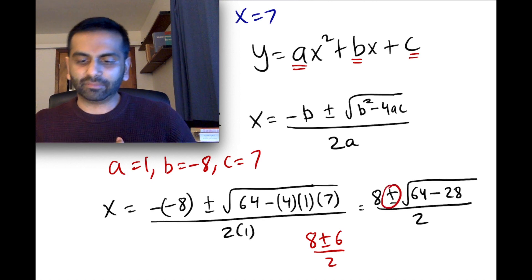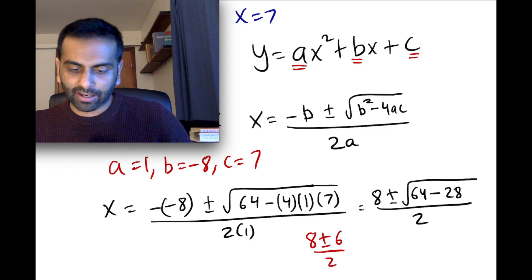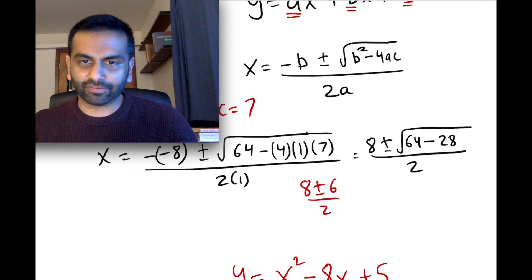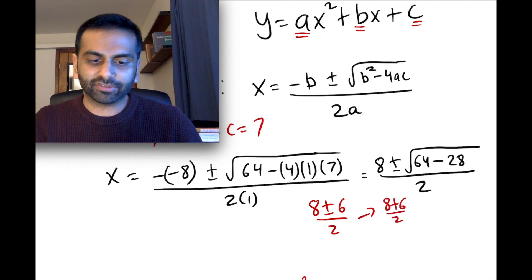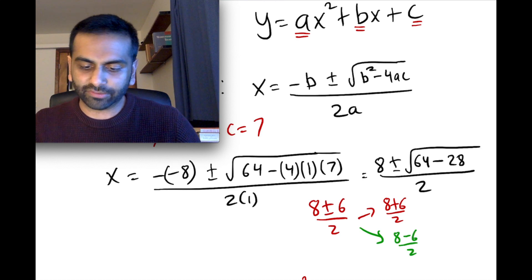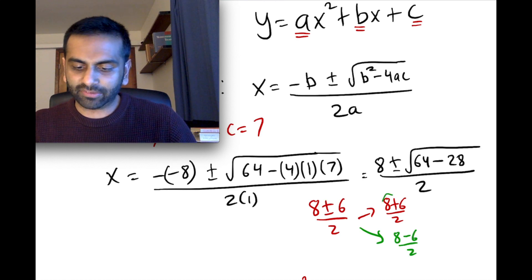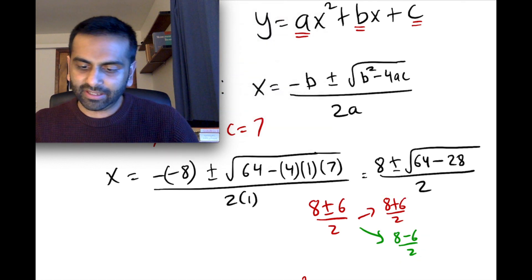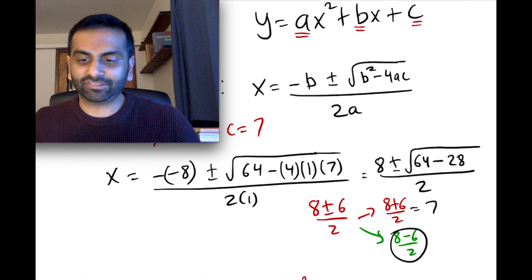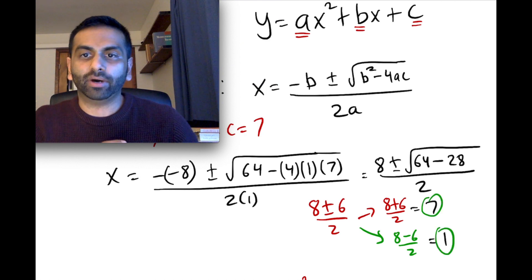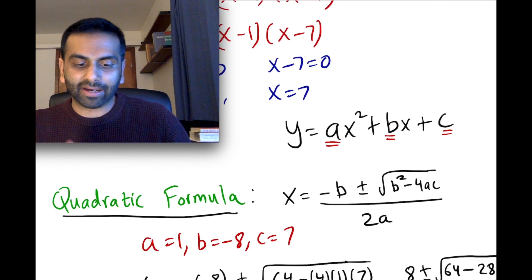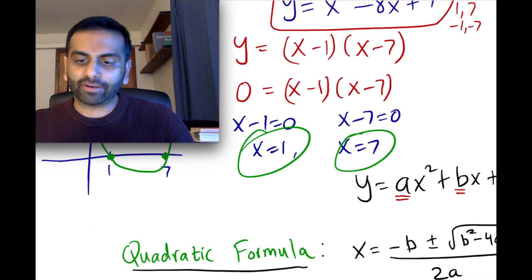So this is overall 8 plus or minus 6, all over 2. The plus or minus means there are two different answers: 8 plus 6 over 2 gives 14 over 2, which is 7; and 8 minus 6 over 2 gives 2 over 2, which is 1. So our two answers are 7 and 1 — exactly what we got from factoring. The quadratic formula gave us the same answer.